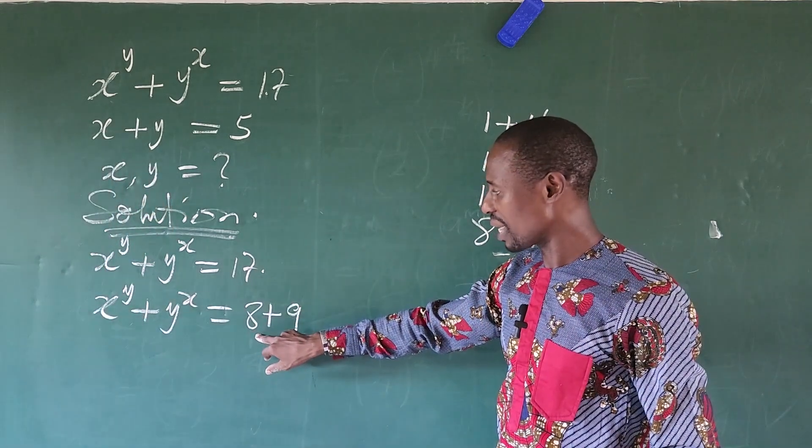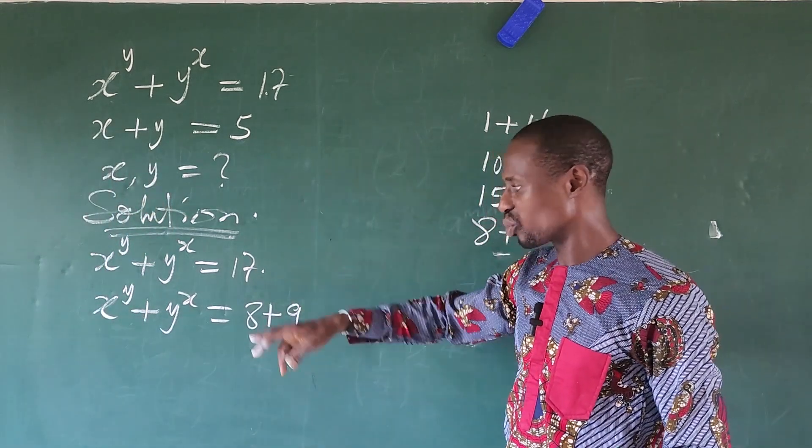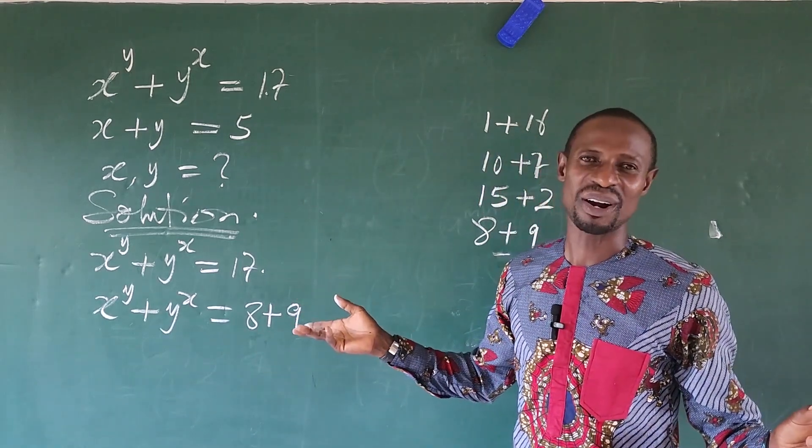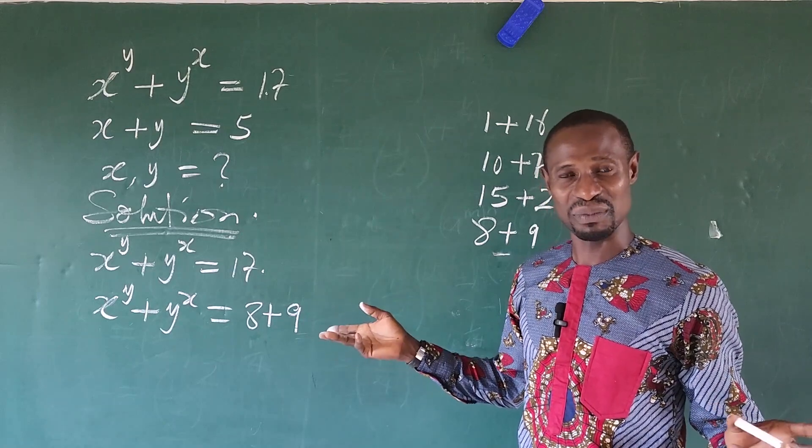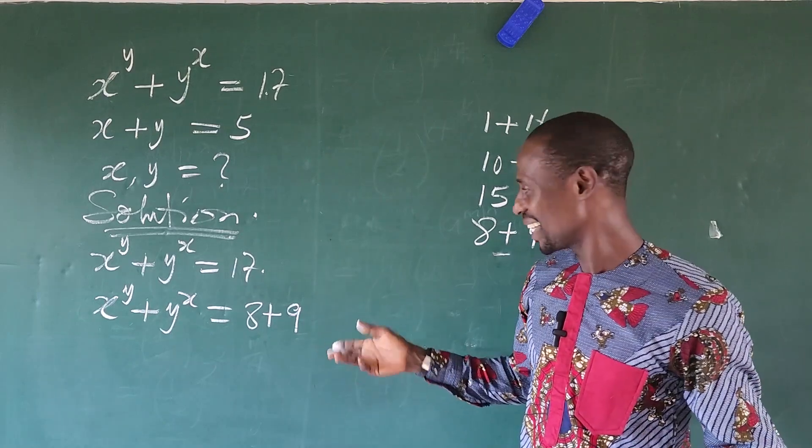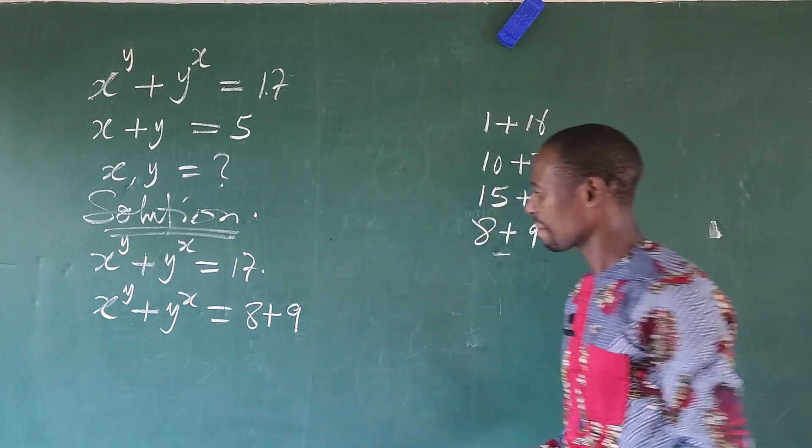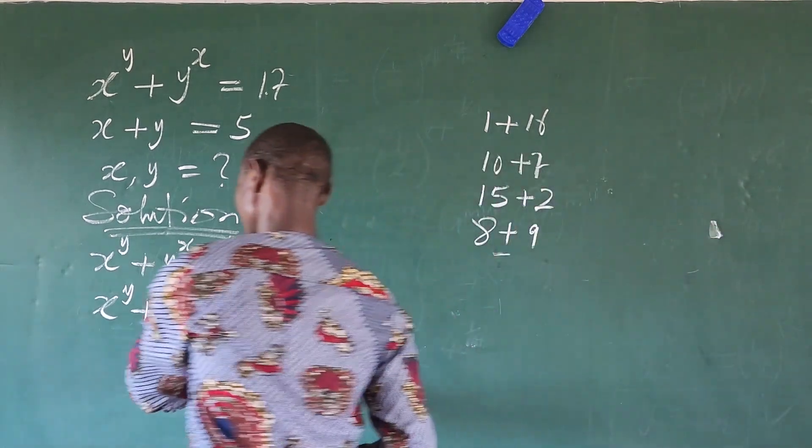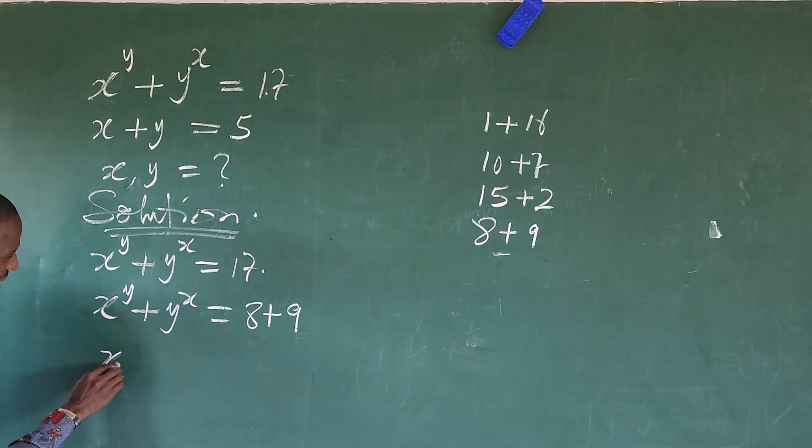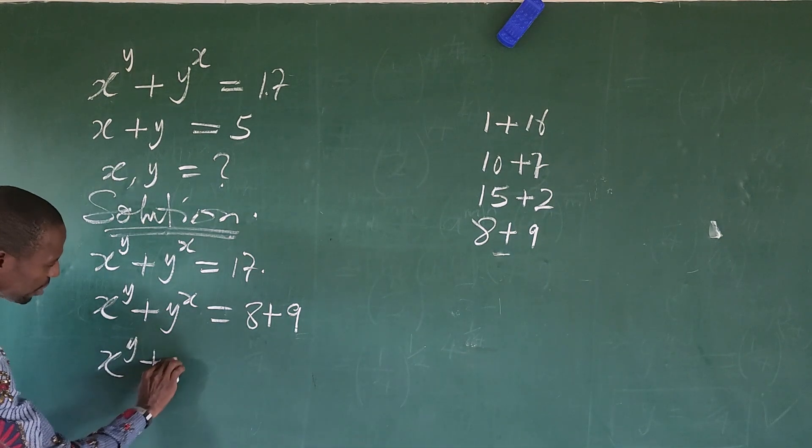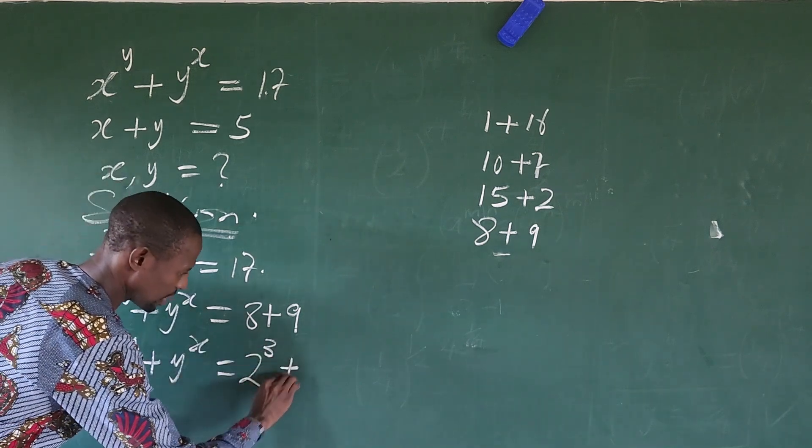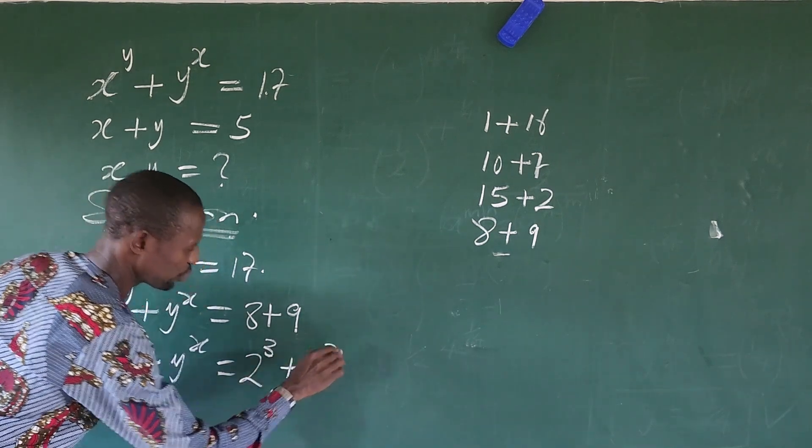We can rewrite this 8. And we can equally rewrite this 9. But before then, let's rewrite this side of the equation. We have x to the power of y plus your y to the power of x equal to your 8 plus 9. What number can we write here? Between 1 and 8, raise it to another number to give us 8. It's 2. 2 to the power of 3. And 2 to the power of 3 will give us 8. Then we do that to 9. 9 will give us 3 to the power of 2. Let's go ahead and rewrite this. We're going to have this x to the power of y plus y to the power of x is equal to 2 to the power of 3 plus 3 to the power of 2.